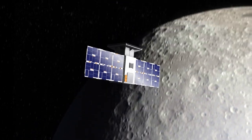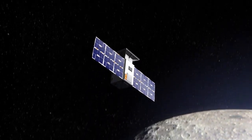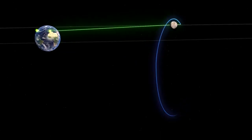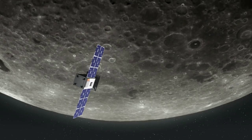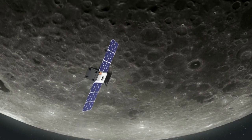NASA also said that Capstone is power positive, meaning it is generating more power from its solar panels than the spacecraft systems are using and remains in a stable condition on track to the moon. This being said, it's not looking good as Capstone continues to spin with NASA unable to correct it.